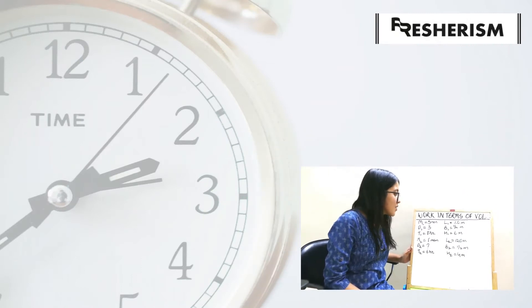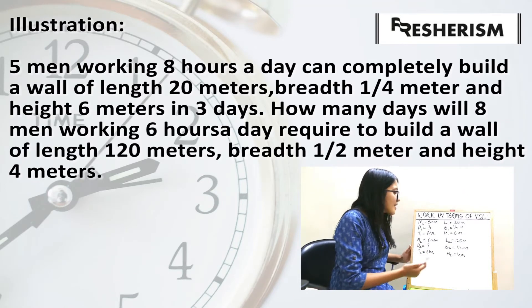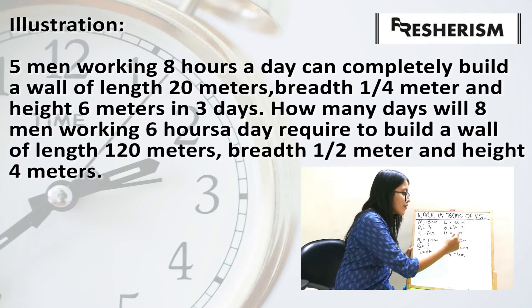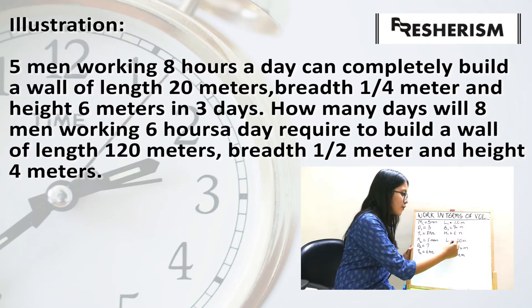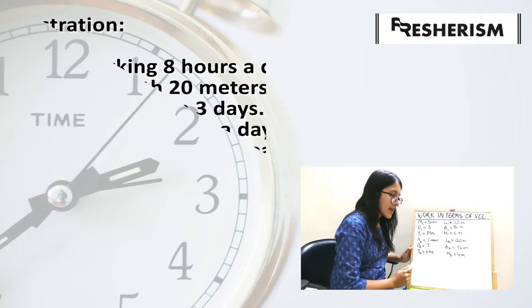Let us now take an example to understand the equation properly. Let us consider that 5 men complete building a wall of length 20 meter, breadth 1 by 4 meter, and height 6 meter in 3 days after working 8 hours per day.